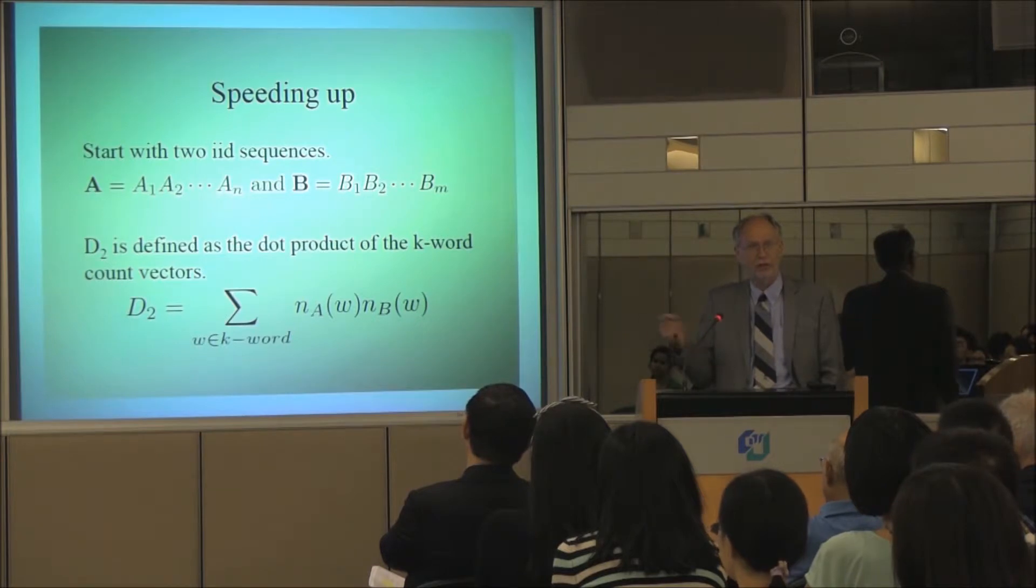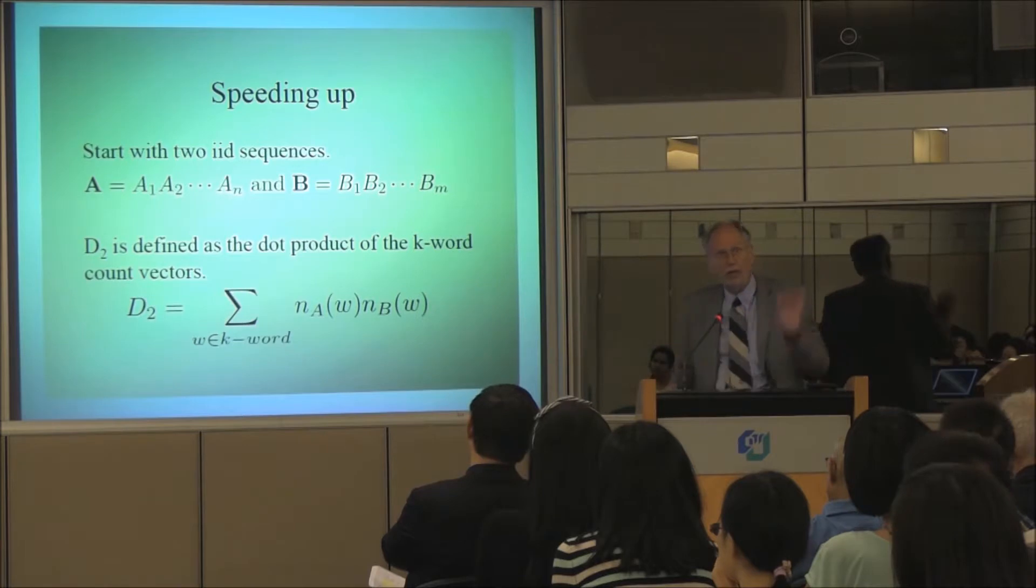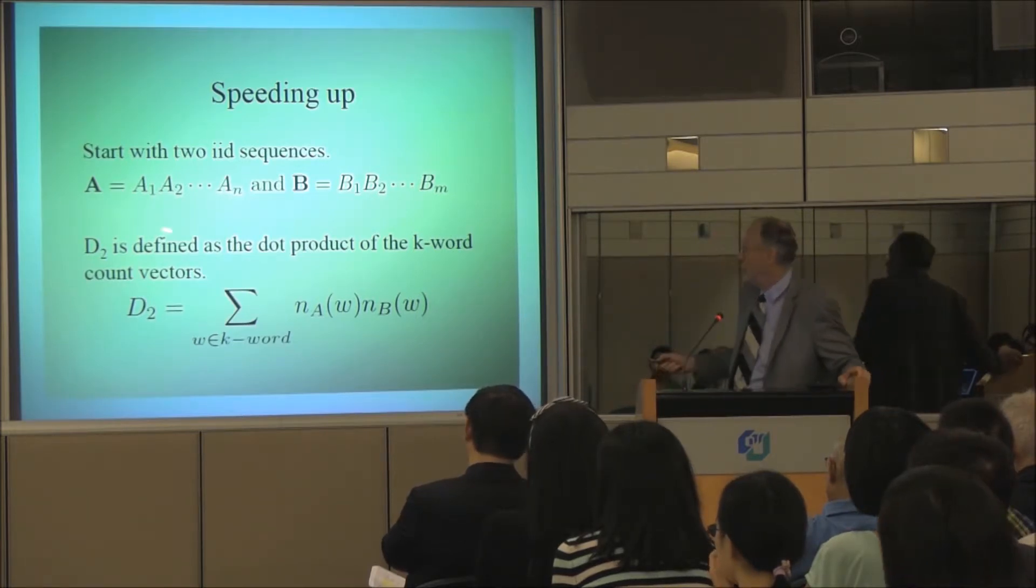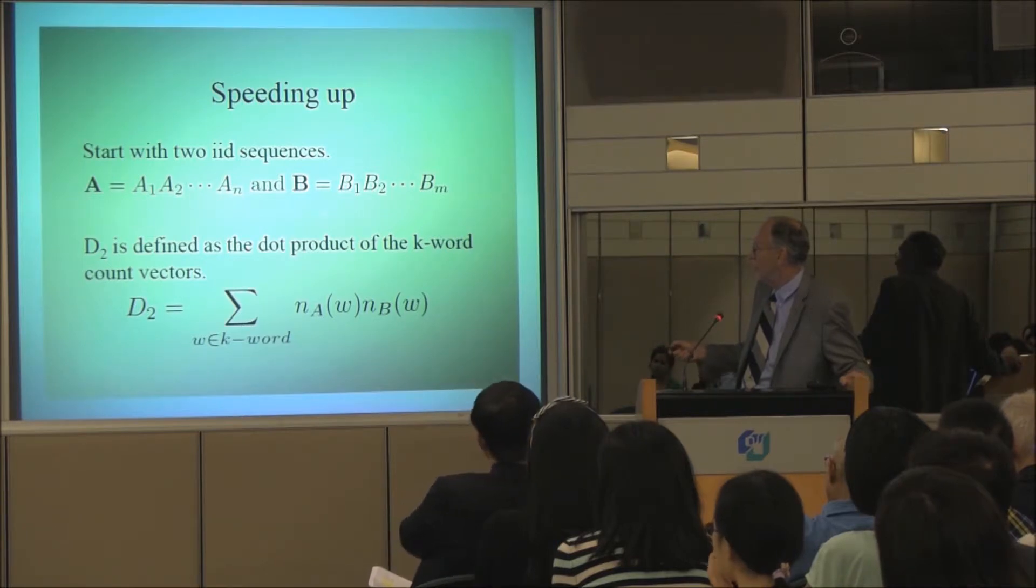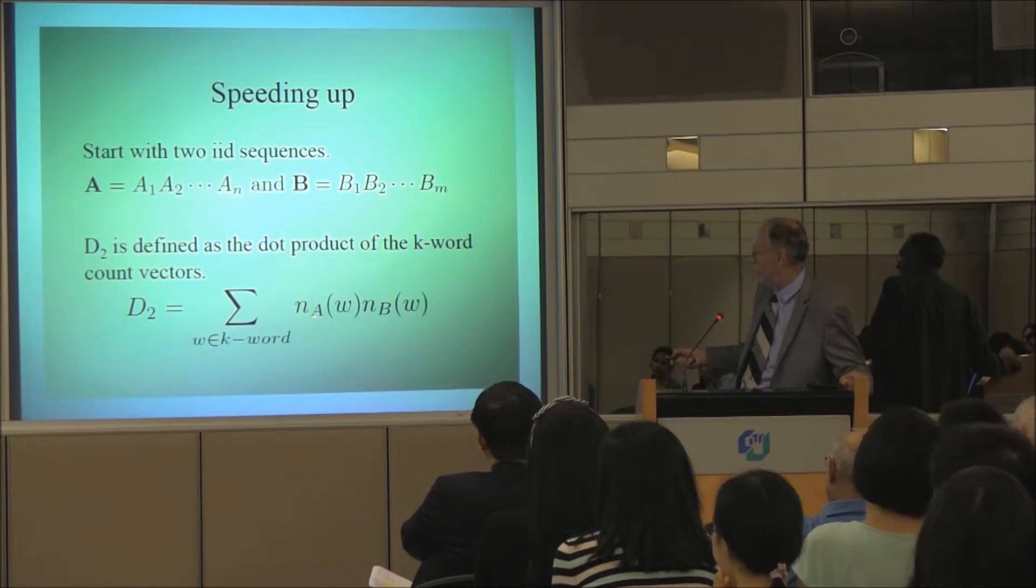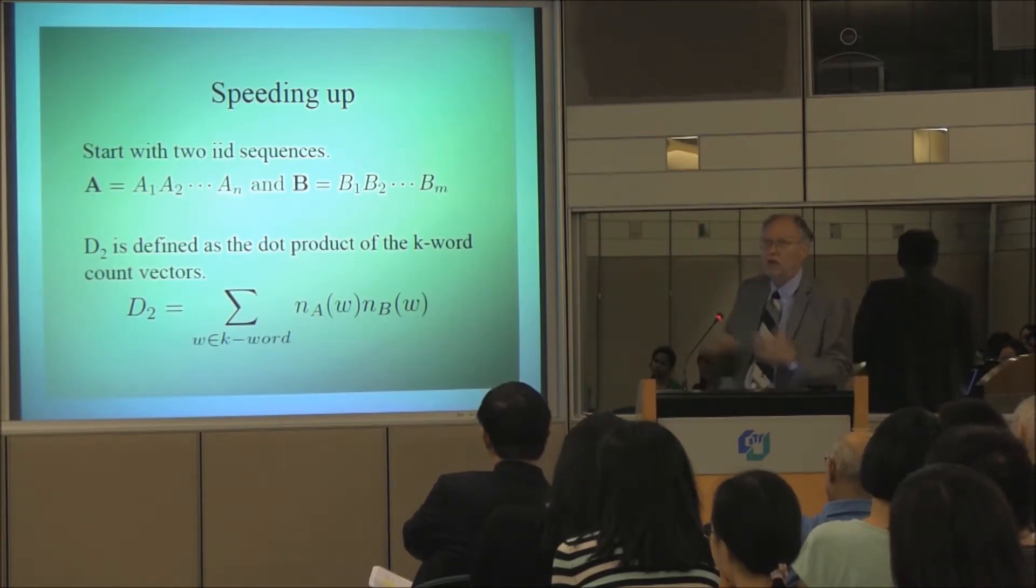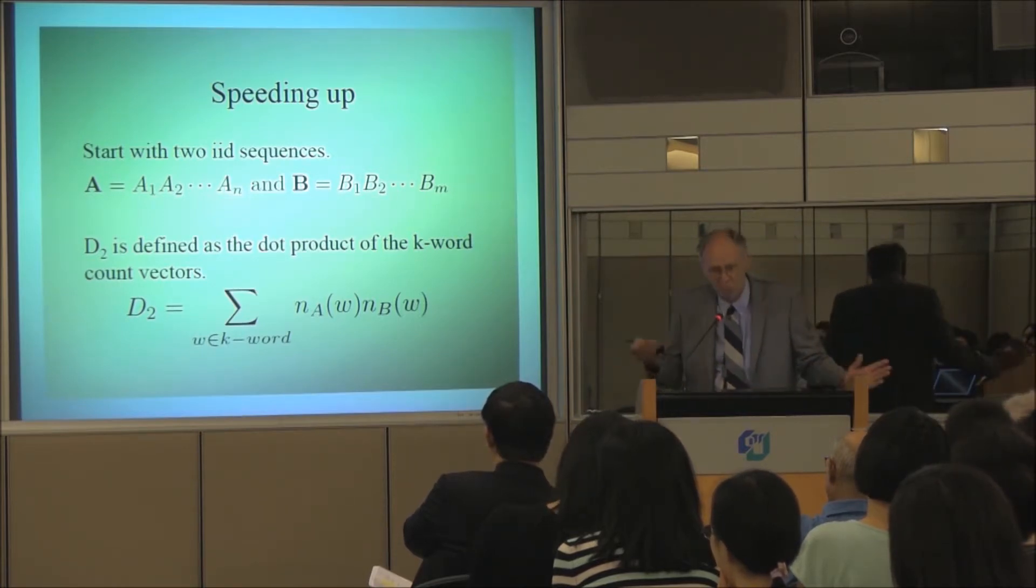We're just going to look at each sequence, look at the statistics and make some comparison. So the idea here, you could think of K, maybe K is three or four. You look at the statistics of the, say, four letter sequences in A, the statistics of four letter sequences in B, and you just do this dot product. In fact, you multiply the number of words W that was in A times the number of words W that was in B, and do this. And you hope if this is bigger, it's going to be more likely to actually have some genuine relationship.